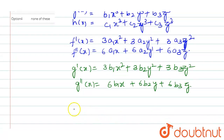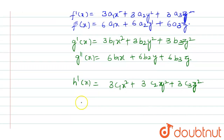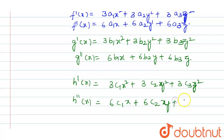At the same time, h'(x) = 3c1·x² + 3c2·x² + 3c3·x², and h''(x) = 6c1·x + 6c2·x + 6c3·x.